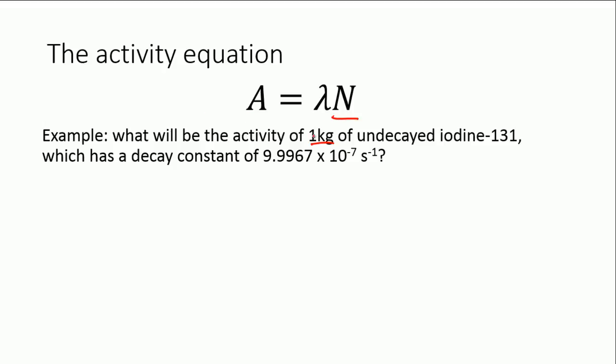One kilogram is not the same as the number of nuclei that you have. So you need to use the molar mass of iodine-131, and then work out how many moles you've got, and then you have to use Avogadro's number to work out how many nuclei you actually have. Well, I've done that all for you, and when you do that, you find out that N is approximately 4.6 times 10 to the 24. So, one kilogram of iodine-131 will have 4.6 times 10 to the 24 atoms in it, and therefore the same number of nuclei.